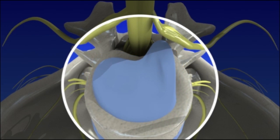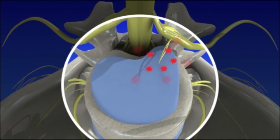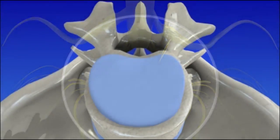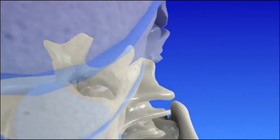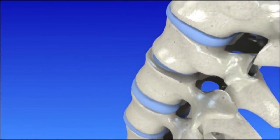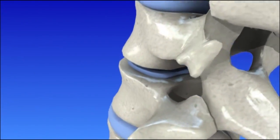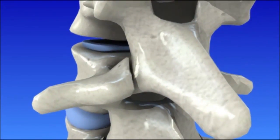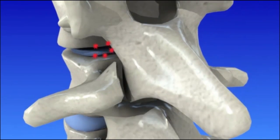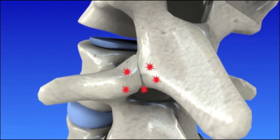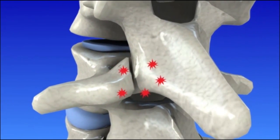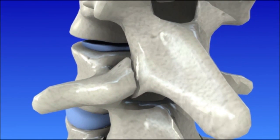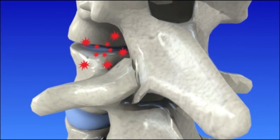Discs heal slowly, during which time new nerve endings can cause pain. Painful bone-on-bone rubbing can occur and lead to changes in the spine structure that cause pain and impair movement.